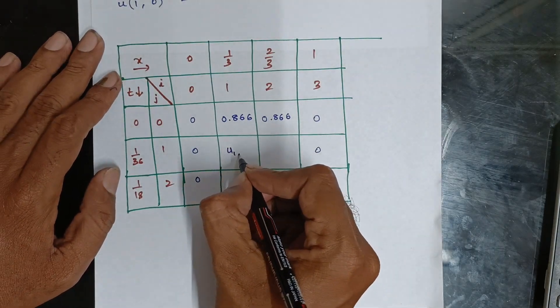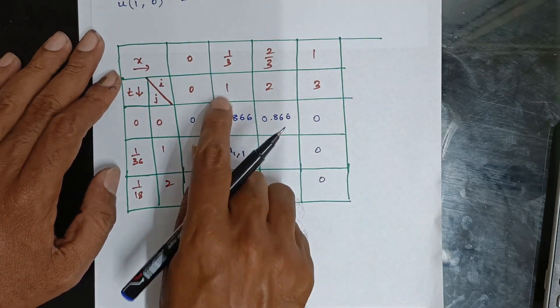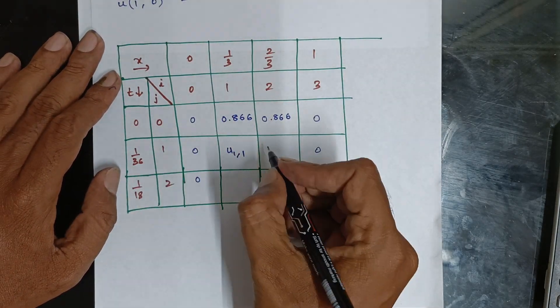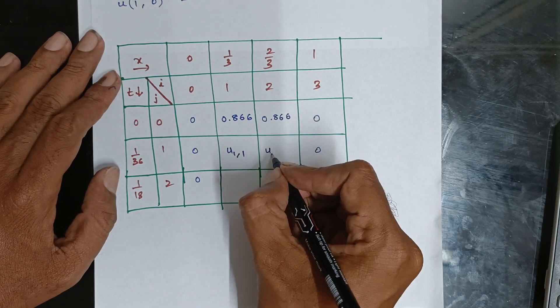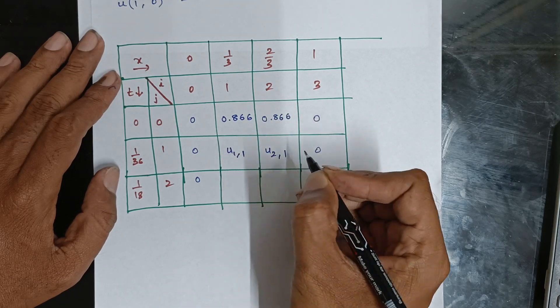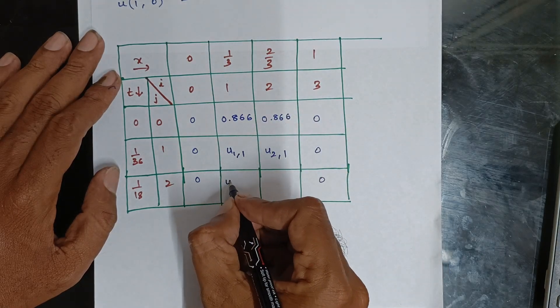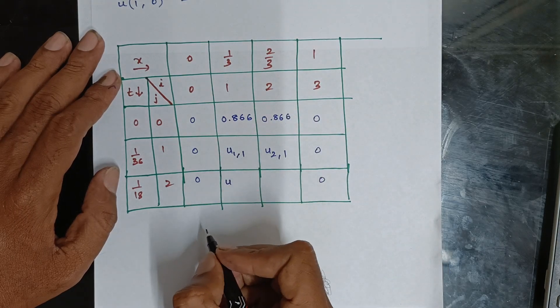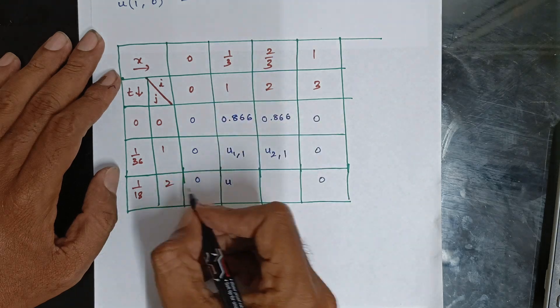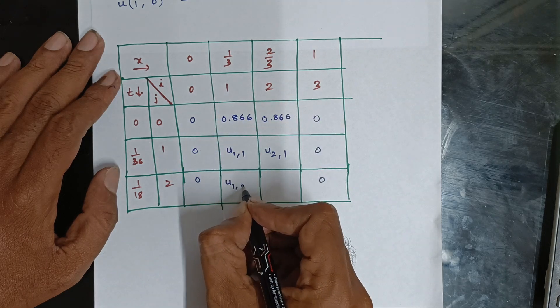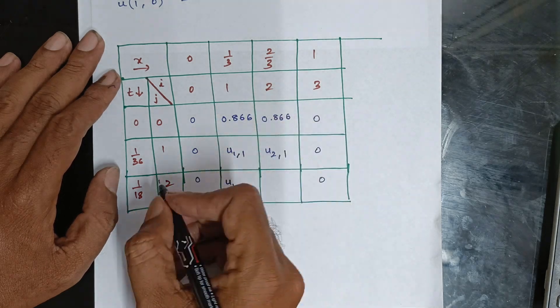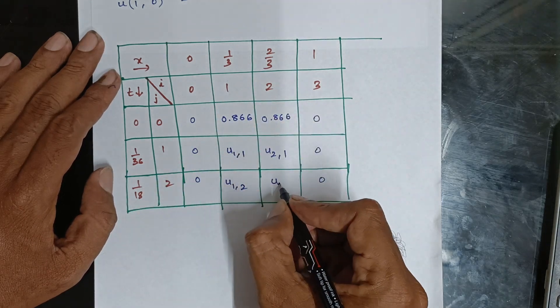The unknowns to compute are u(1,1) and u(2,1) — the interior grid values at the first time level.